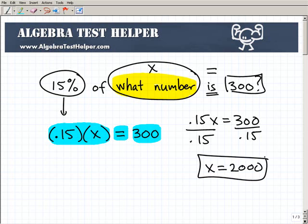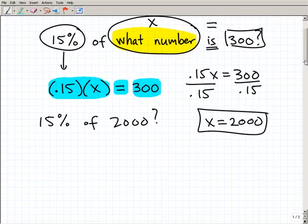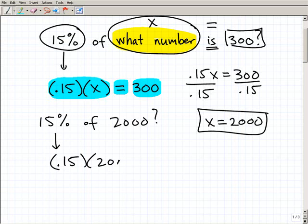So let's go ahead and check this real quick. What if I said, what's 15% of 2,000? All right, so you would be like, okay, that's easy. I'm just going to go ahead and take that 15%, change it into 0.15 and multiply it by 2,000. And let's see what we get. Checking on my calculator, you get 300.